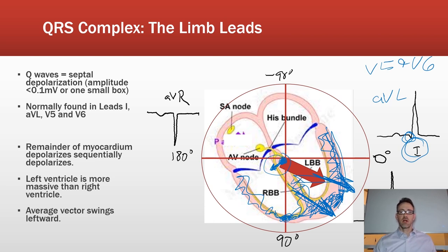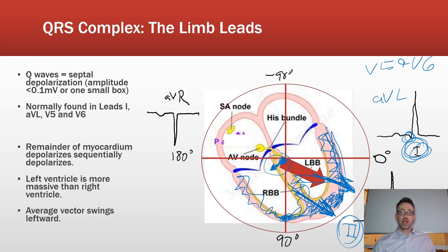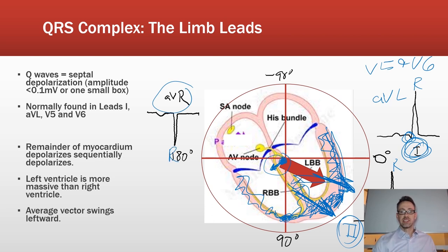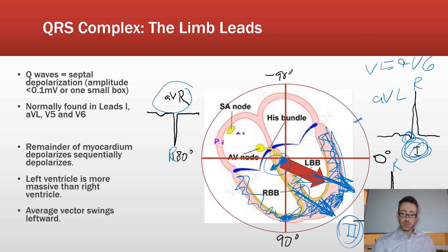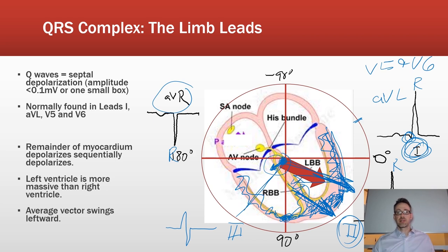The large red arrow represents the mean ventricular electrical activity after the entire ventricle has depolarized. This vector points between leads 1 and 2, so lead 2 shows an upright R wave. AVR is negative because the vector moves away from it. AVF and AVL would be positive, and lead 3, being nearly perpendicular to the mean vector, may appear biphasic.